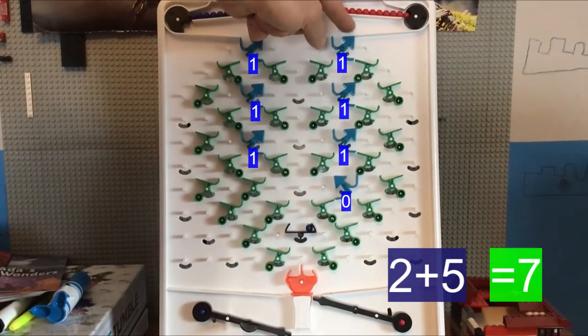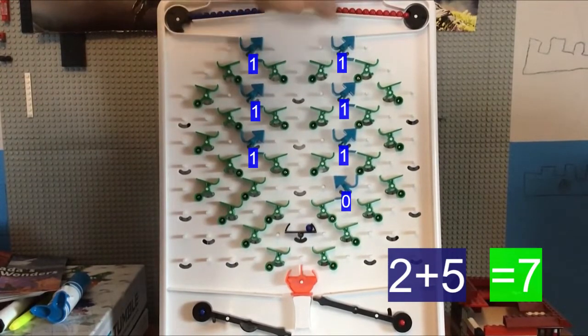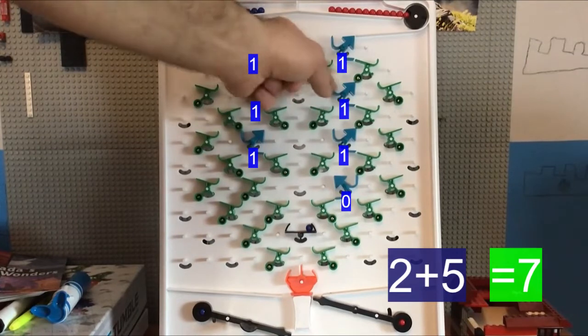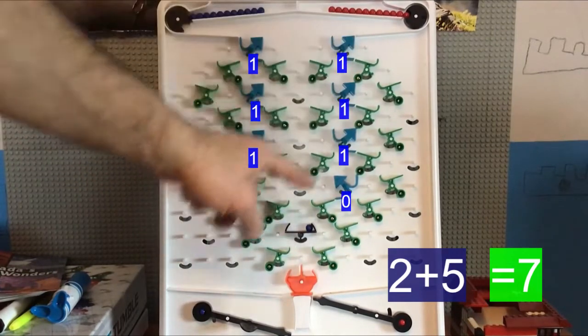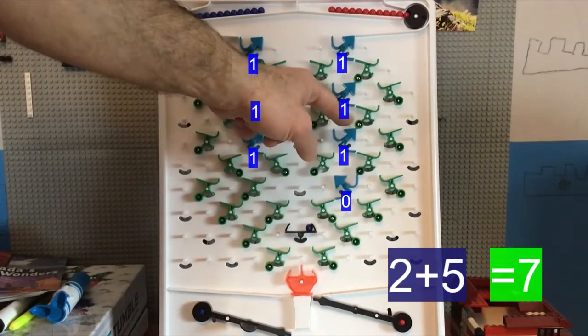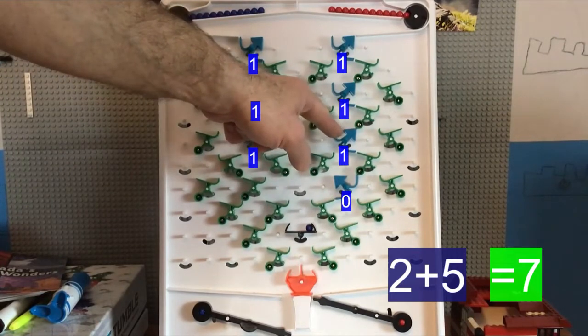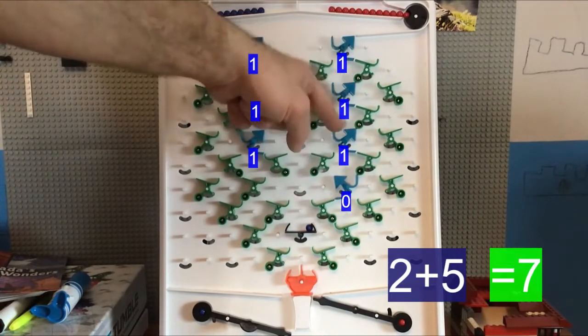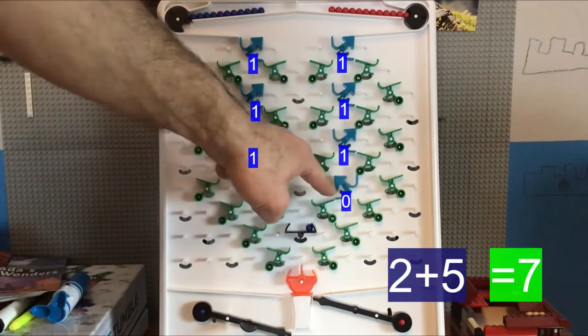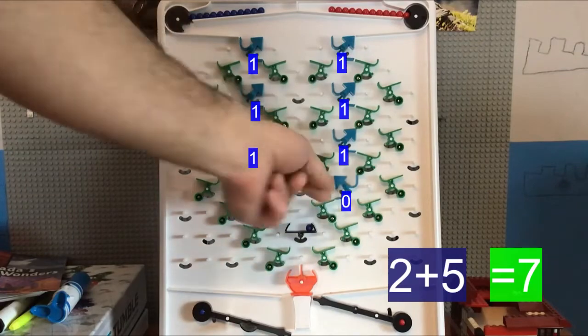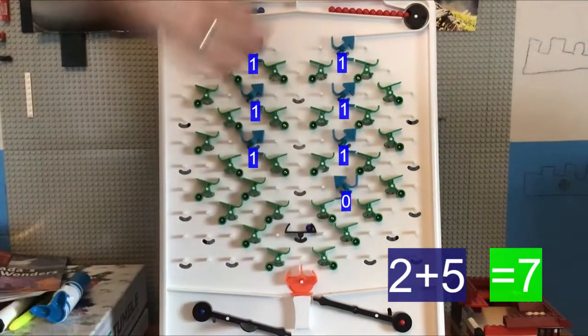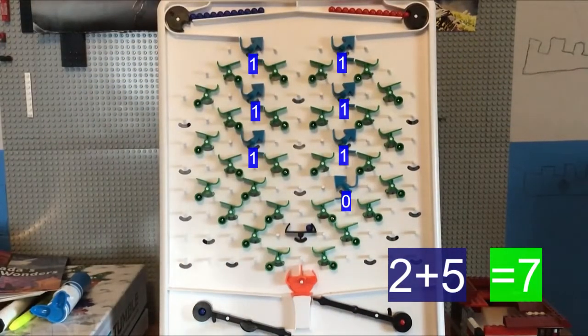If you look up here, we have the first bit on the right is the one. The second bit is our two. And it's also turned to the right. So we have one plus two is three. And then our third bit represents the number four. And it's turned to the right. So we have three plus four is seven. Our last bit over here, which represents the number eight, is set to zero. So we do have the correct number there of seven.